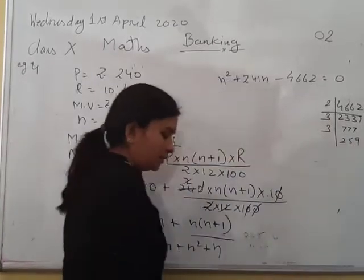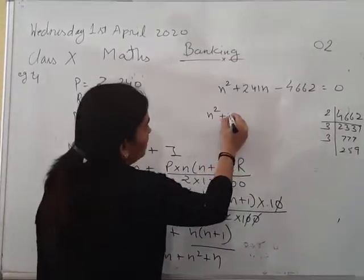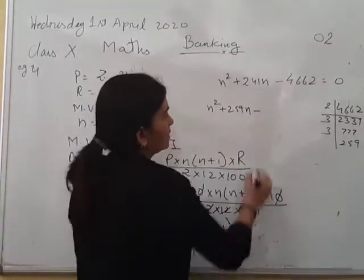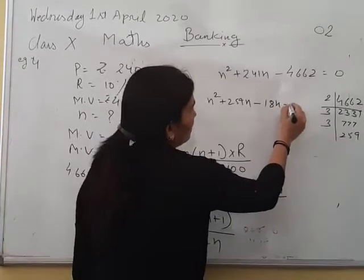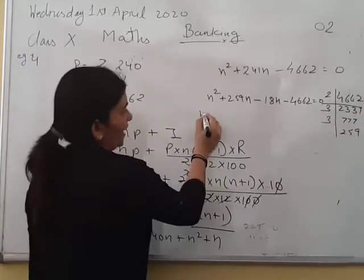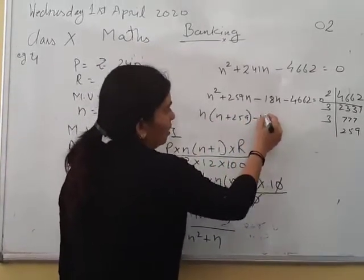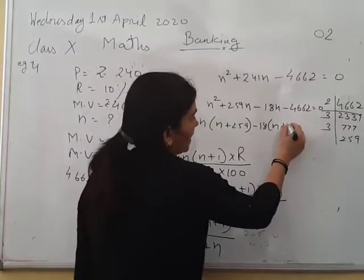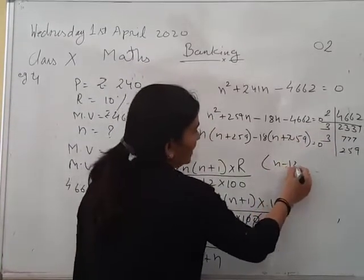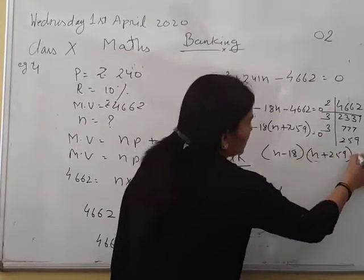Now the term will be N square plus 259N minus 18N. Rest of the term will be as it is. Now N common, N plus 259, 18 common, N plus 259 equals to 0. So one bracket it is N minus 18 and N plus 259 equals to 0.